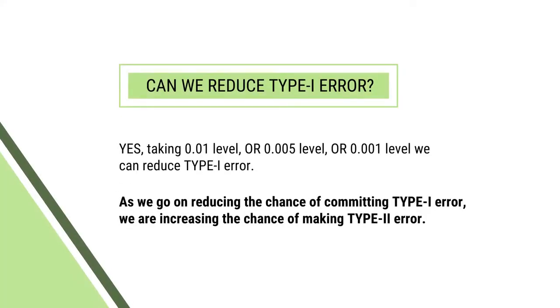So there are two types of error: alpha error and beta error. Can we reduce type 1 error, that is alpha error? Yes. By taking 0.01 level, 0.005 level, or 0.001 level, we can reduce type 1 error. However, in the process of reducing alpha error by taking a stricter level of significance, there is a possibility of increasing the beta error. So while minimizing type 1 error, there is a possibility of increasing type 2 error.